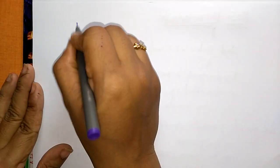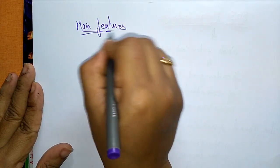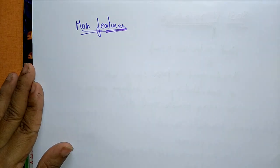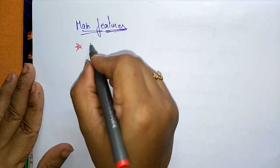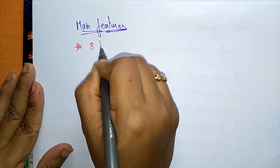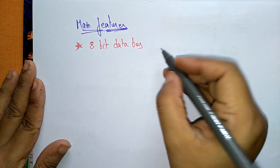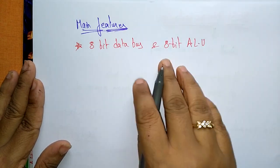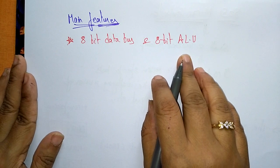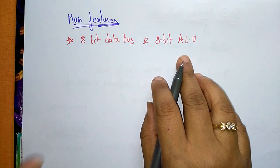Now let us see the main features of the microcontroller. First, the 8051 microcontroller consists of an 8-bit data bus, which is used to transfer data, and an 8-bit ALU — arithmetic logic unit — which is used to perform all arithmetic and logical operations. So the ALU can take 8 bits of data at a time and perform the operation.